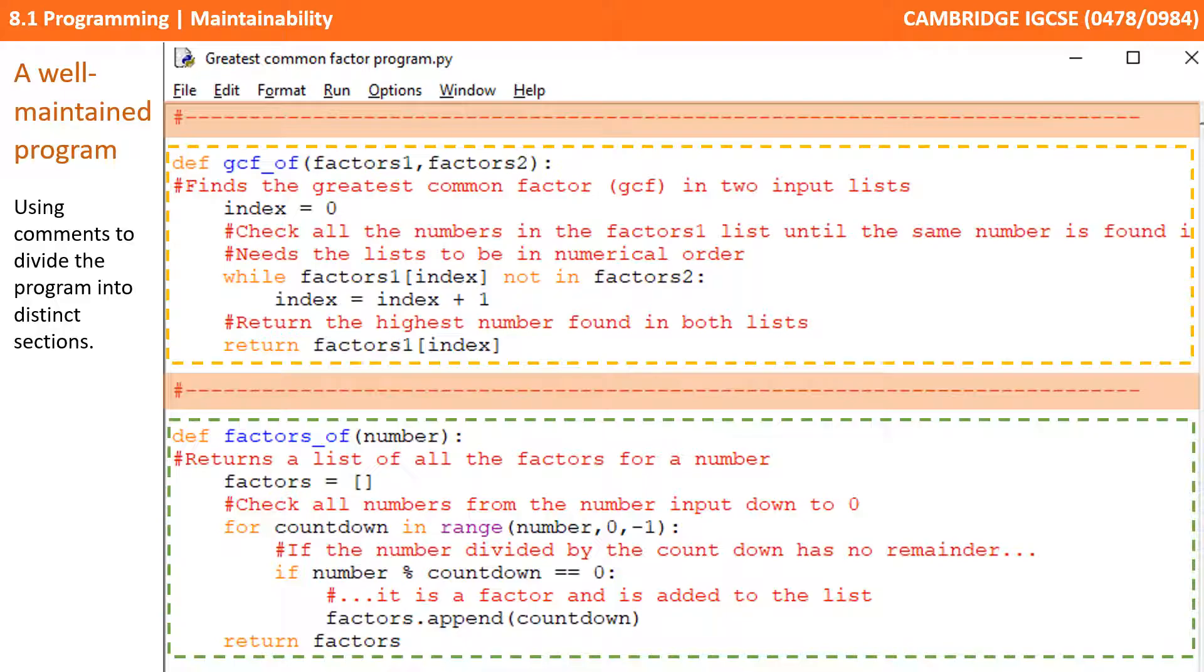Well, first we're using comments to divide the program into distinct sections. I can see there are two procedures and I've broken those up with that line there of dashes. So, it's really visually easy to instantly see where a new subroutine starts and ends.